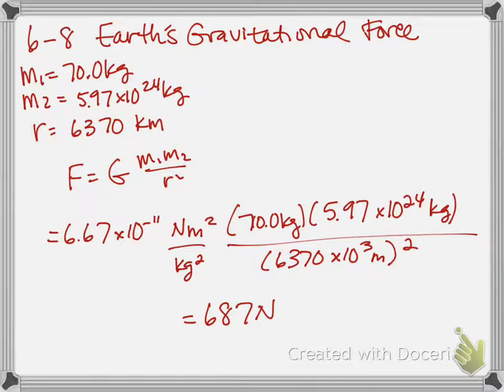Now, back in Chapter 4, we also learned a different way to calculate the weight of an object, and it was just by using mg, right? M times little g, our 9.8, which is our acceleration due to gravity here on Earth.